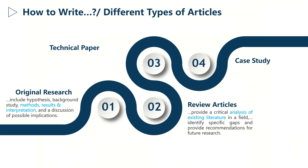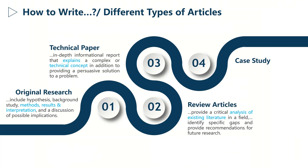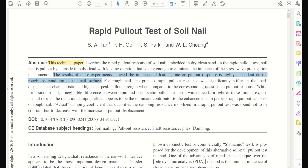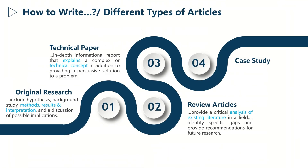Then we come to the third group of articles, which is technical papers. They are in-depth informational reports that explain a technical concept, in addition to providing a persuasive solution to problems.